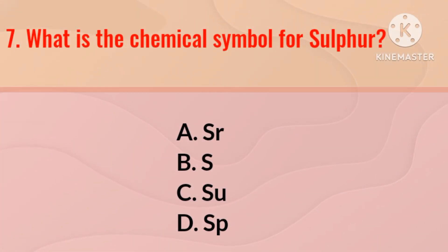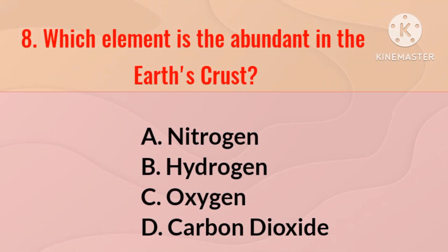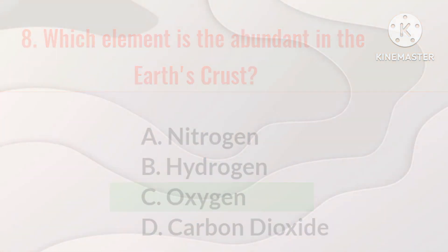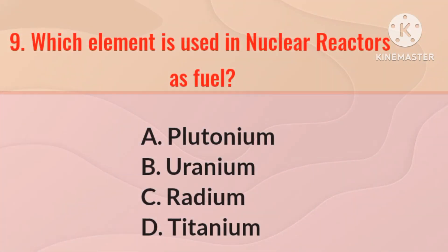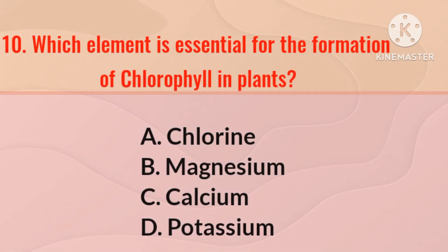What is the chemical symbol for sulfur? The right answer is S. Which element is the most abundant in the Earth's crust? The right answer is oxygen.